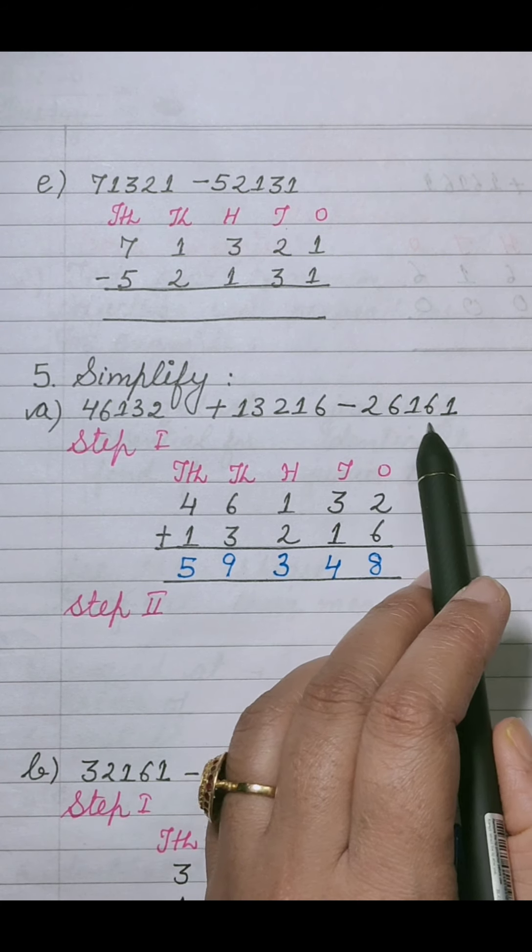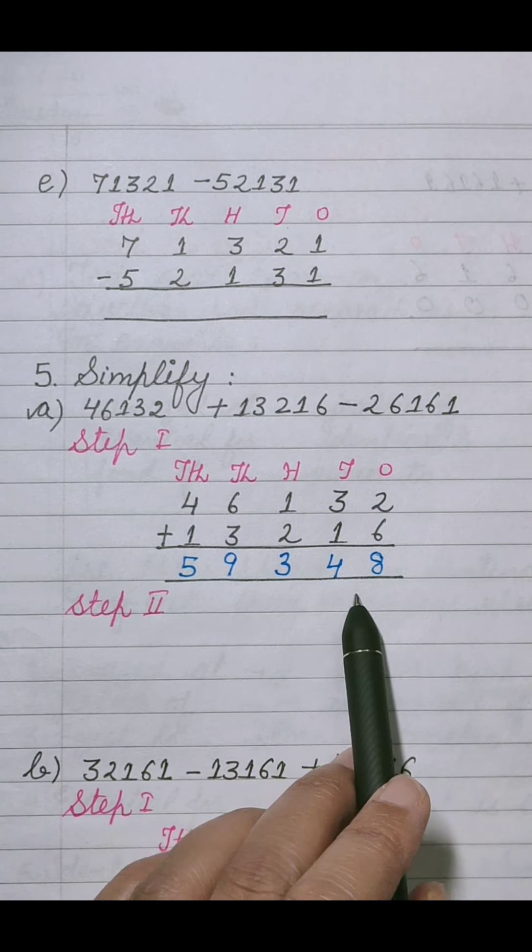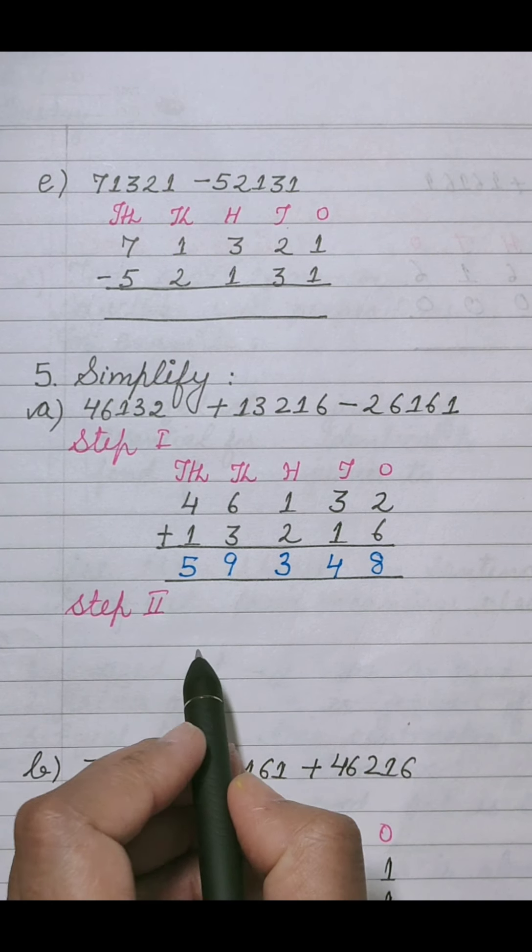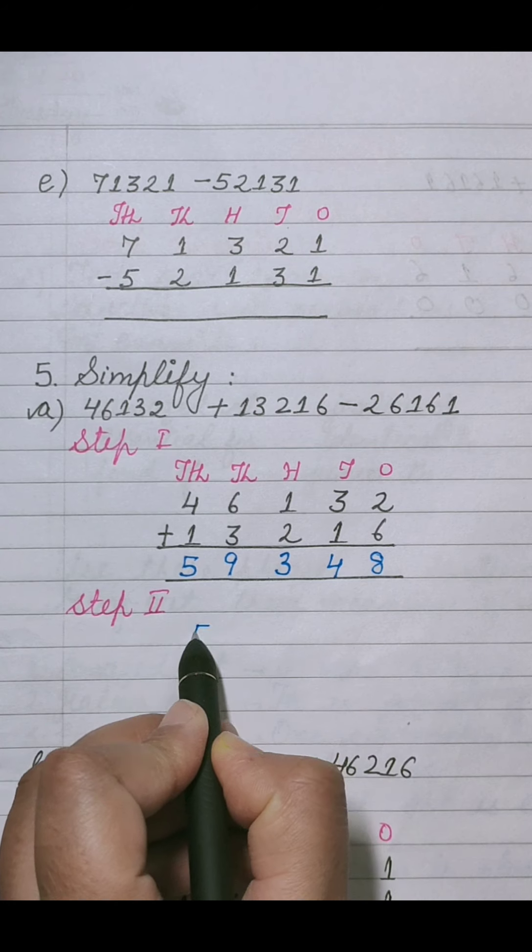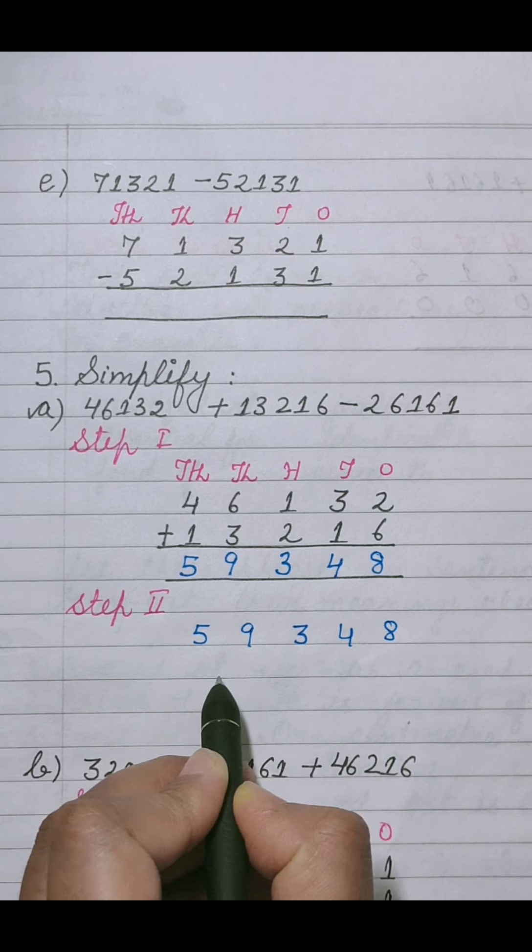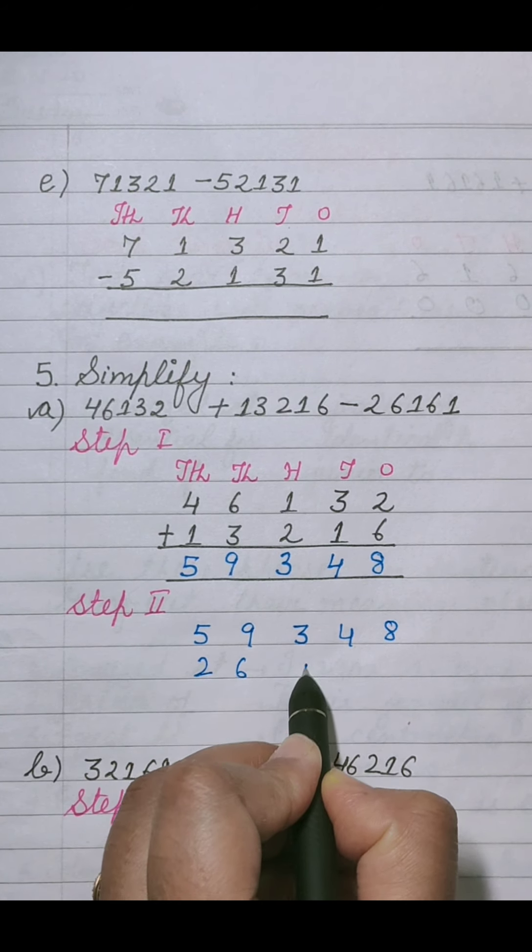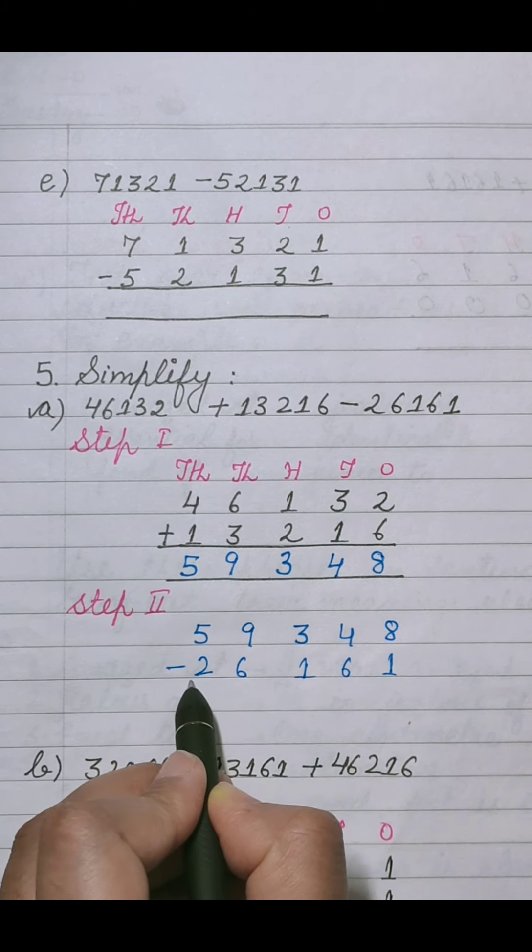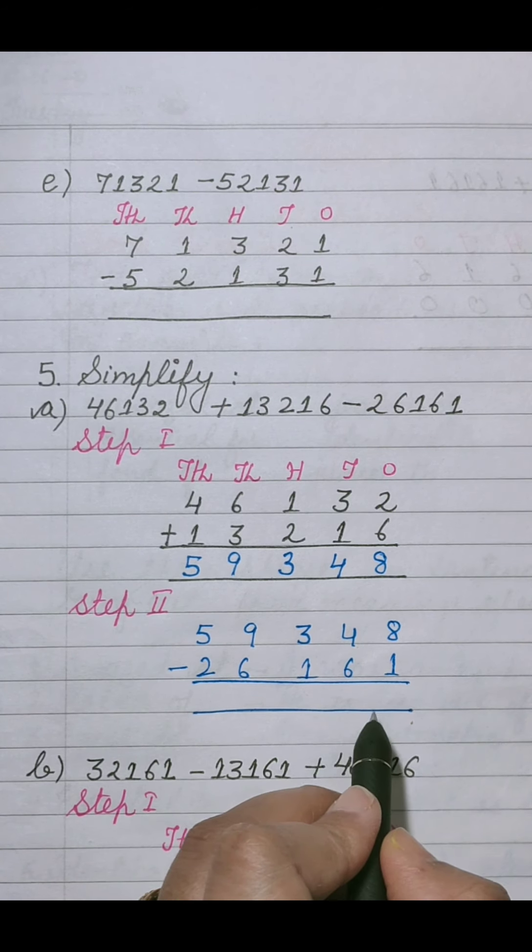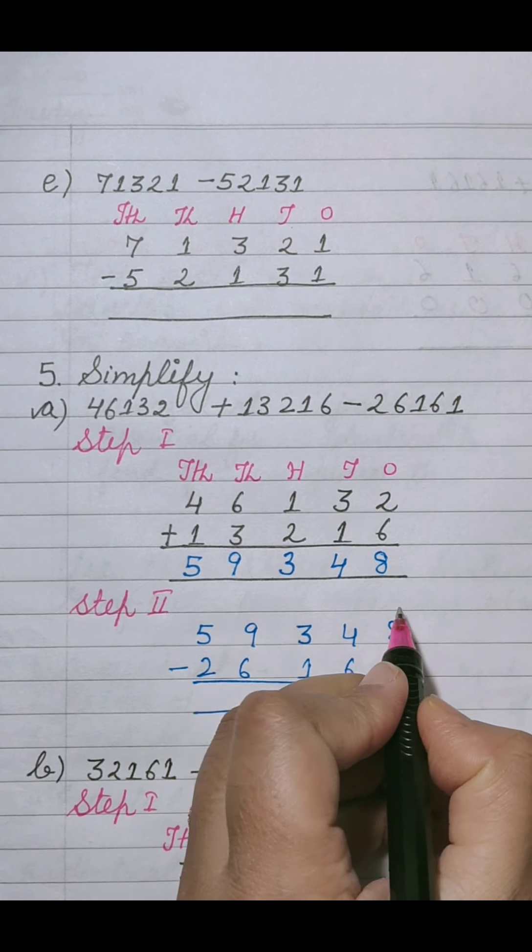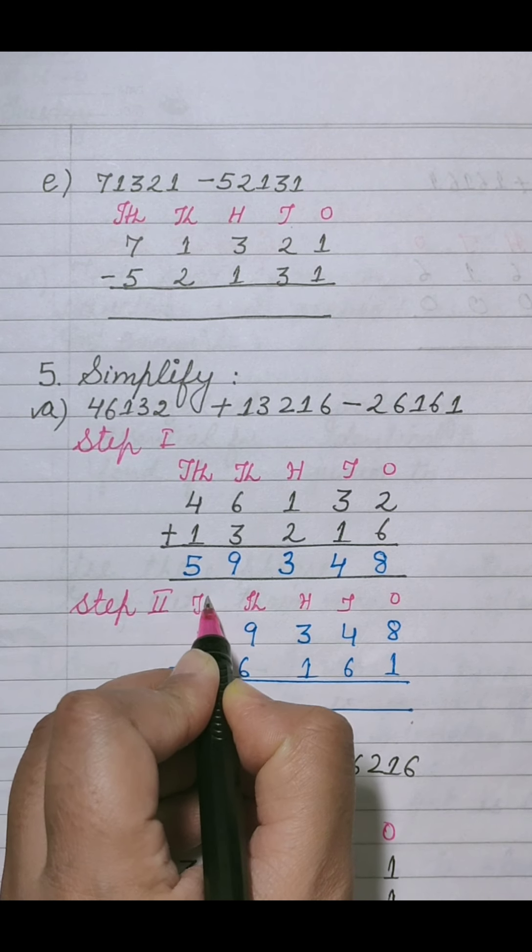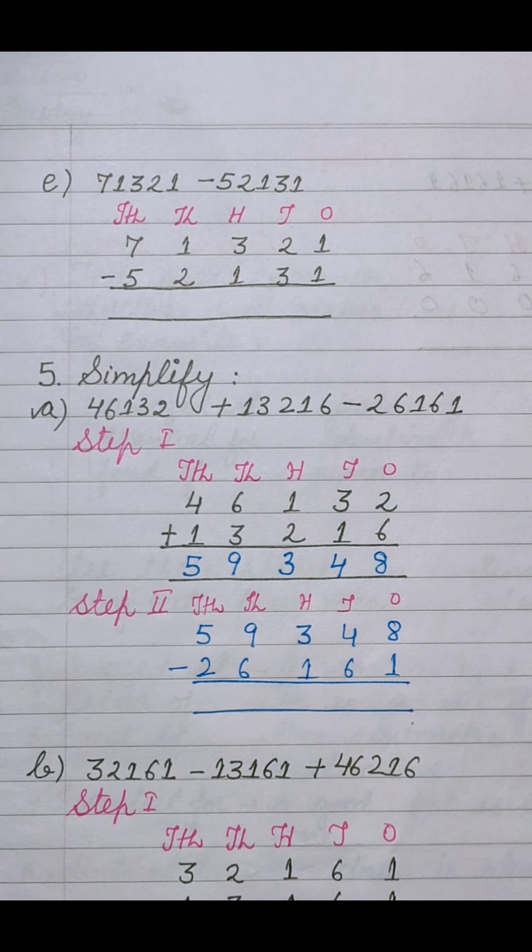Now we will subtract third value from this answer. हम last वाली value को इस answer में से minus करेंगे. Let us start. 59,348 minus 26,161. We will show its places also: 1, 10, 100, 1000, and 10,000.